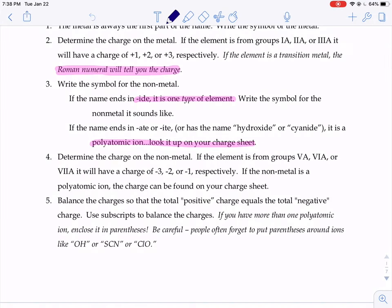The last step, after you know what the ions are that are combining and you know what the charges are, you have to balance those charges to make sure that the total positive equals the total negative. Let's see how this works with a few examples.